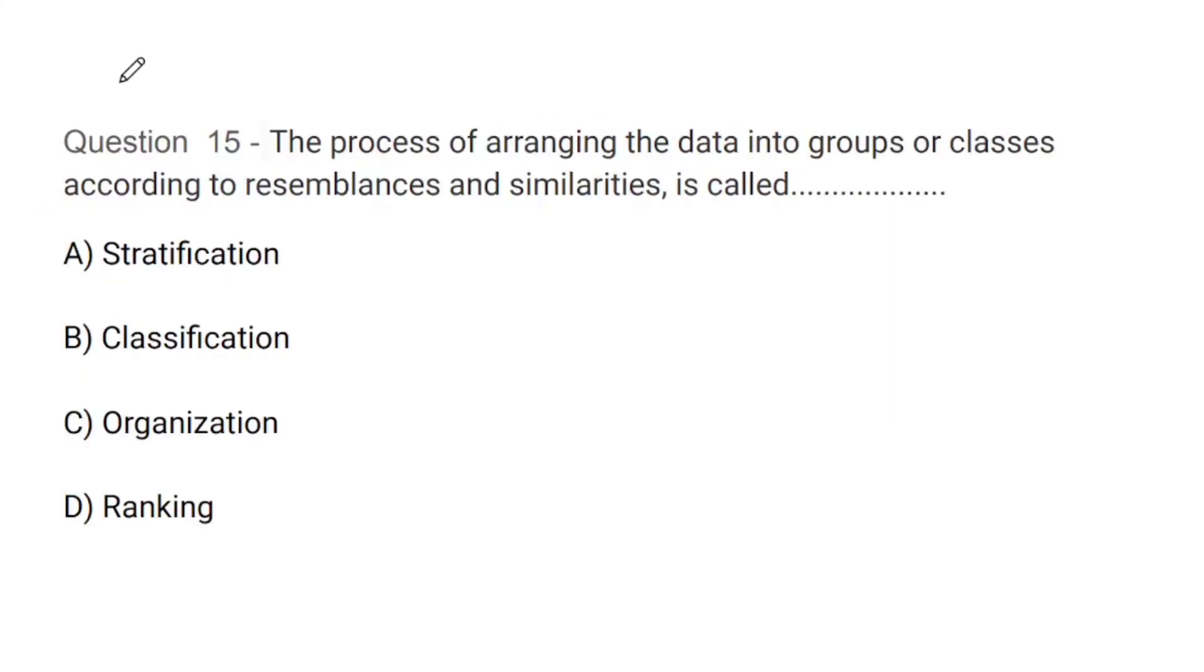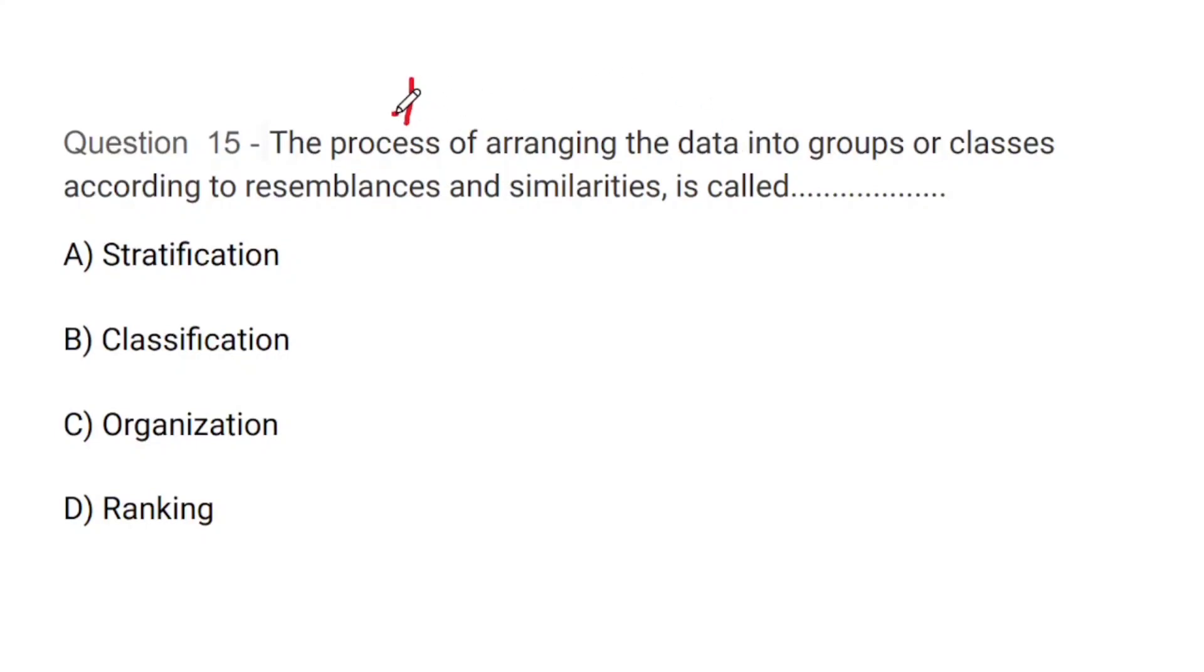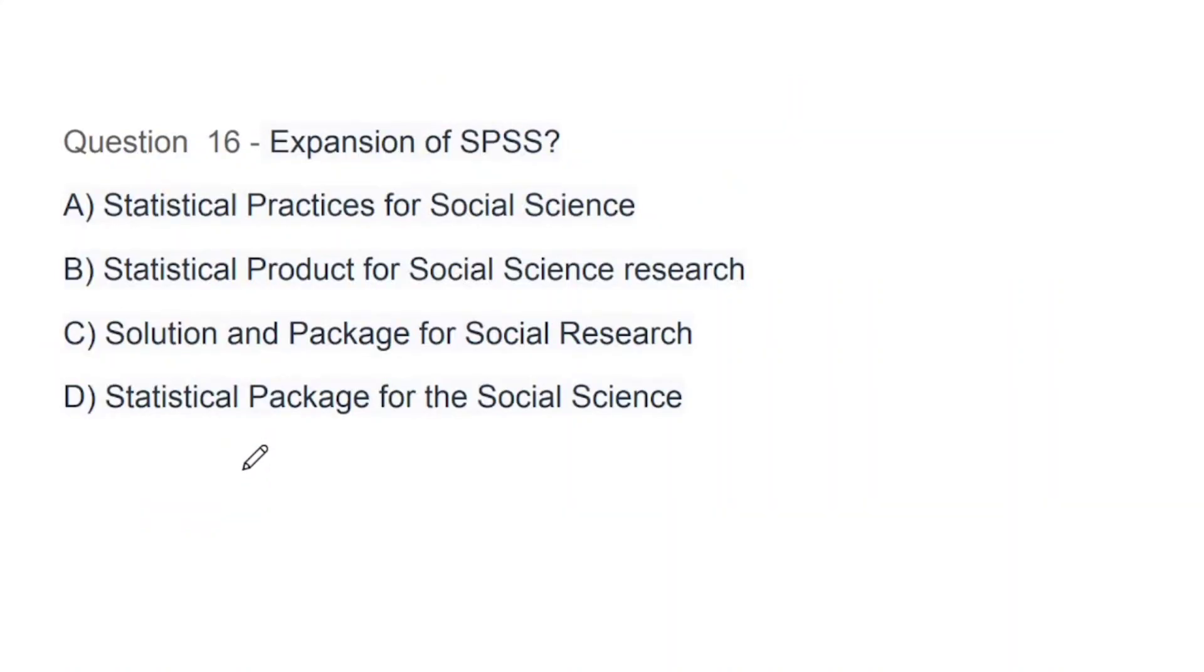Question number 15: The process of arranging data into groups or classes according to resemblance and similarity is called what - stratification, classification, organization, or ranking? If we talk about a process in which we arrange data into different groups, different classes, on the basis of their similarities, then what would be the answer? The correct answer is B, that is classification.